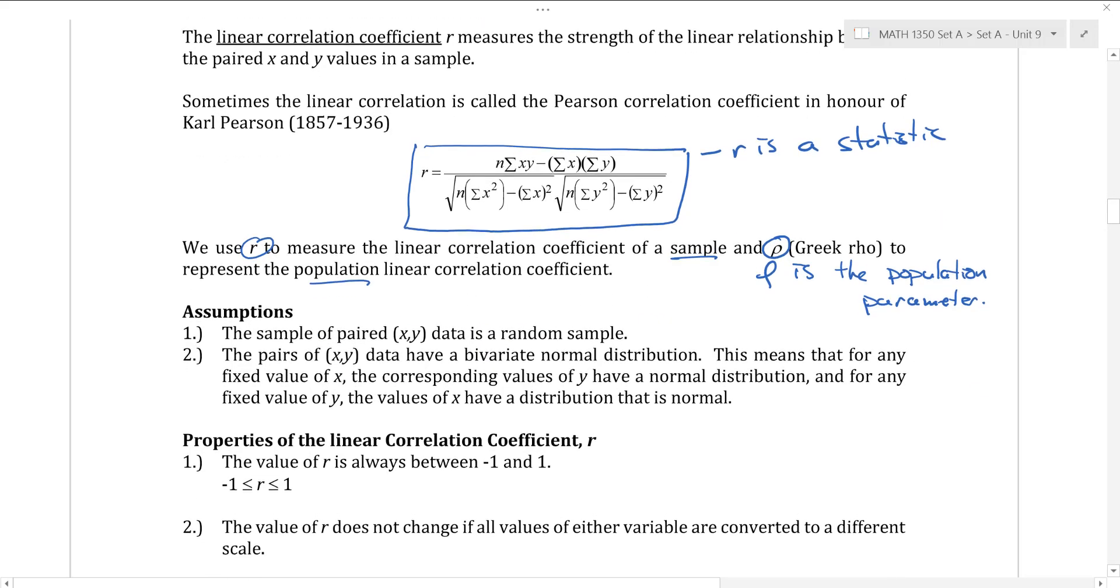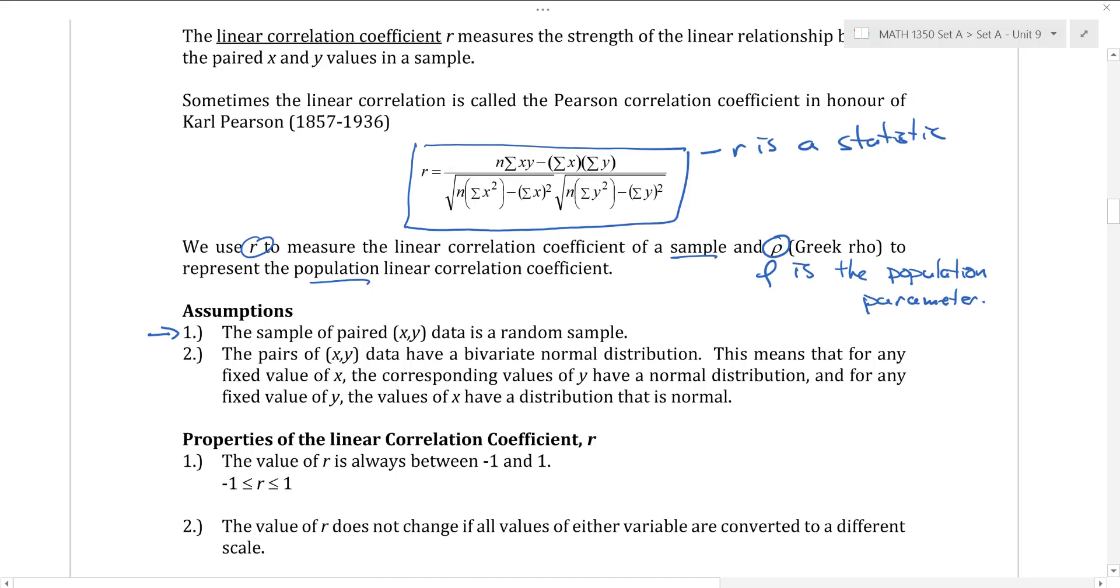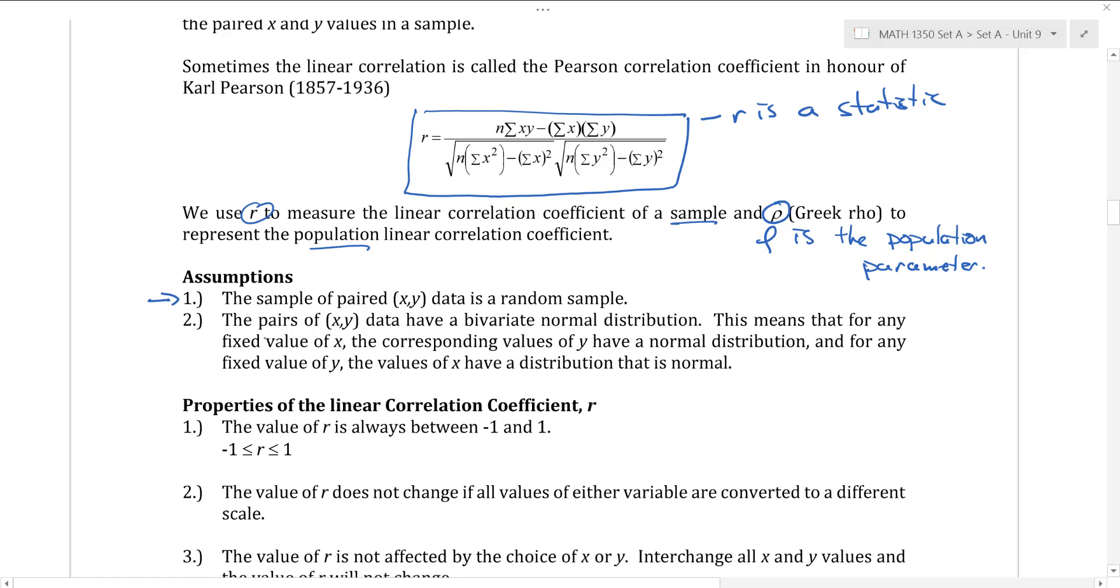There are, as usual, a couple of assumptions to do this. So we always want the data to be coming from random sample. That is fine. We have a new one here. We will insist that the pairs have a bivariate normal distribution. This is a word we haven't heard before. Basically, it's described here. It means basically that x and y are both normal. Or rather, for a given value of x, the corresponding y's we might expect are normal, and vice versa. For any given y, the values of x that we expect will also be normal. This is a reasonably fair assumption, depending on which kind of data you're working with.